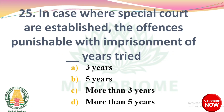Question 24: In case where special courts are established, the offences punishable with imprisonment of dash are tried — options: 3 years, 5 years, more than 3 years, more than 5 years. The right answer: option C, more than 3 years.